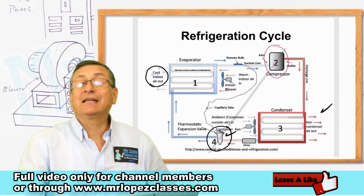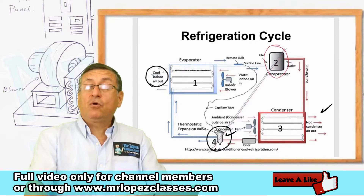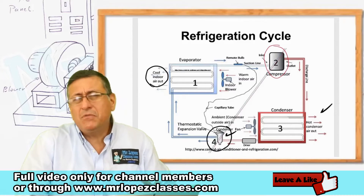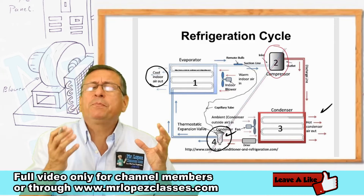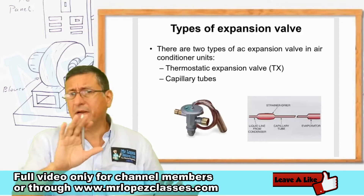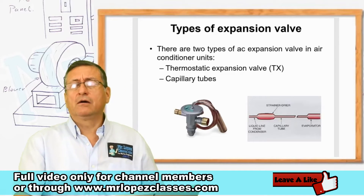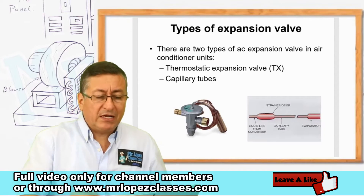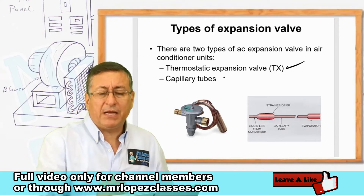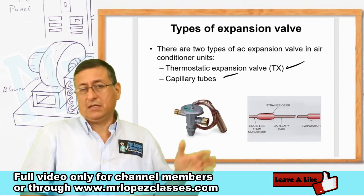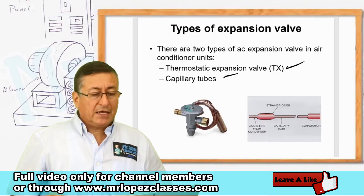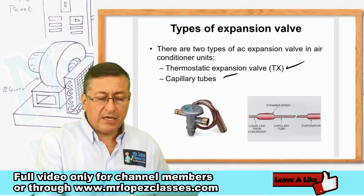In this particular case, this is a thermal expansion valve. We basically have two types of expansion devices: the thermostatic or thermal expansion valve, and the capillary pipes. The capillary pipe is the example explained in the previous micro video. This one here is a thermal expansion valve.